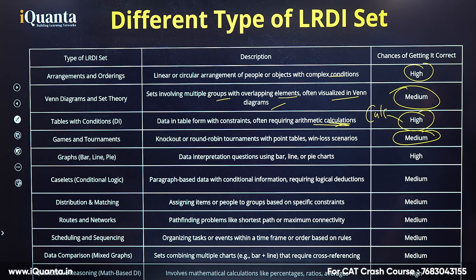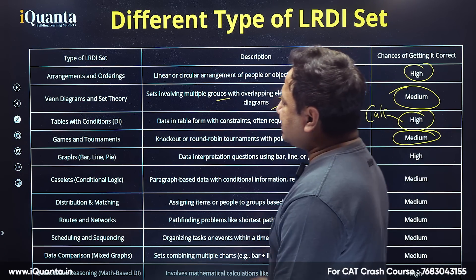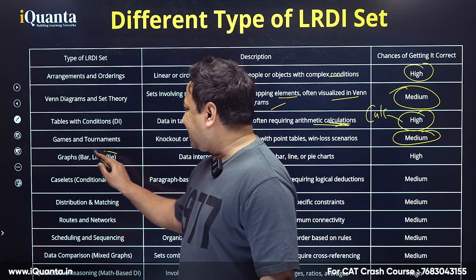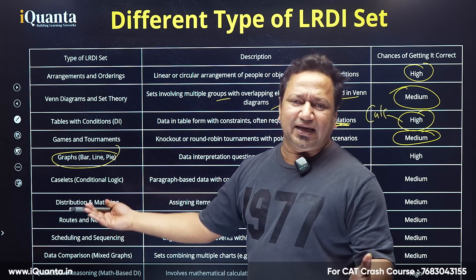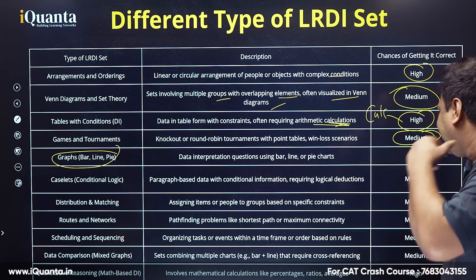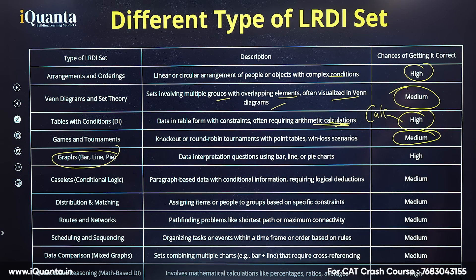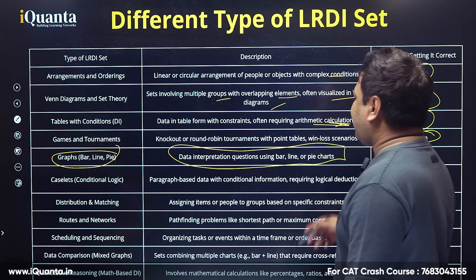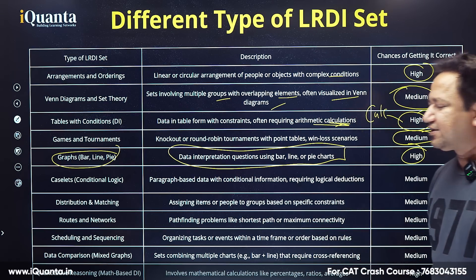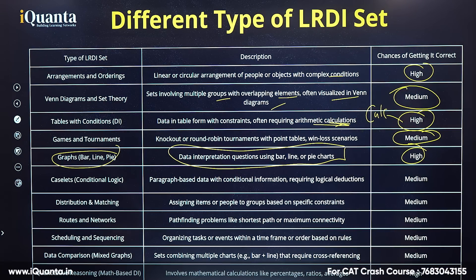Coming to graphs — bar graph, line graph, pie graphs. Graphs are essentially just data representation techniques and will majorly be calculative. The chance of getting them correct is very high because we have the calculator and, by this time, we are experts in calculation.